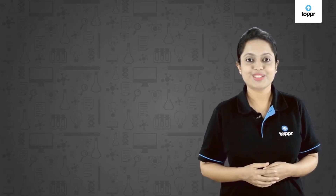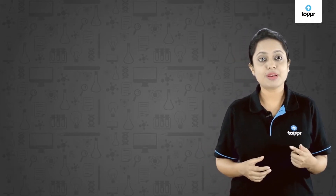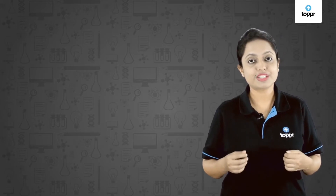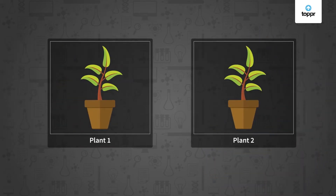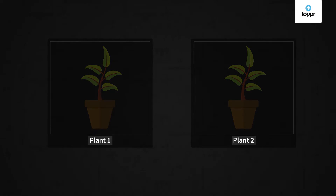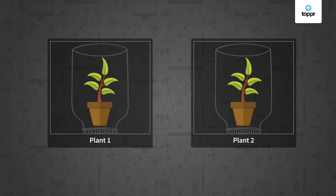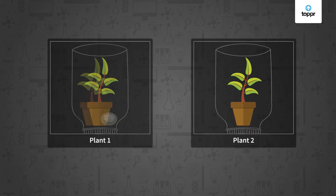Let's do one more experiment to see if you got the gist of photosynthesis. In this experiment we'll also use iodine solution to test the presence of starch. We'll take two potted plants and label them as plant one and plant two. Keep these plants in the dark for three days — this will remove all the starch present in the leaves. Then invert glass jars over both plants, and place potassium hydroxide inside the jar containing plant one. Potassium hydroxide absorbs carbon dioxide. Seal both jars airtight and keep them in sunlight for three hours.